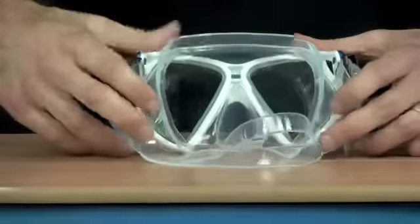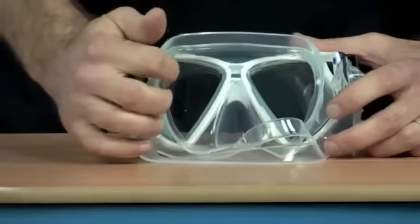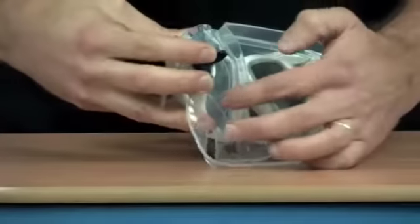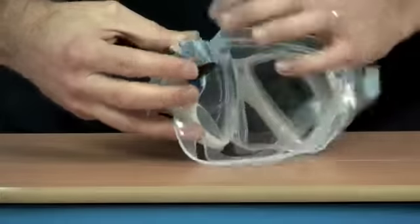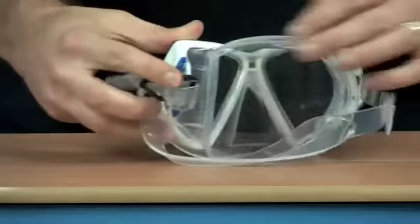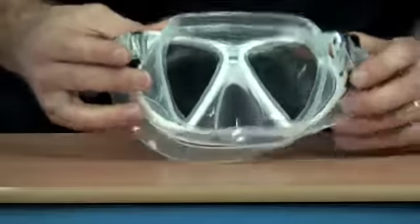On the actual skirt of the mask, you have a normal double feathering. There are some strengthener sections on the silicone, some ribbing you can see around the edge of the skirt, just to help it keep its shape.